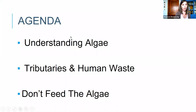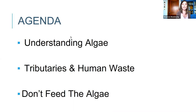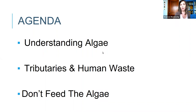What we're going to focus on today is first just a basic understanding of how algae forms, because that's going to lay the groundwork for how it's forming in our tributaries and how human waste interacts with that formation. We're also going to talk about how you can report algae blooms that you see, and we'll see what is coming in from the dashboard from the Florida Department of Environmental Protection where we're seeing algae blooms in the river right now.